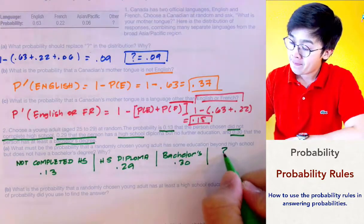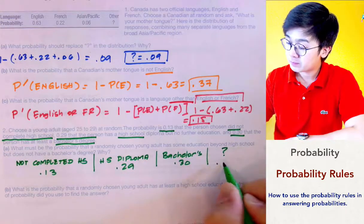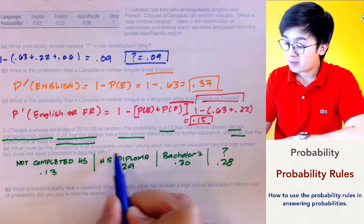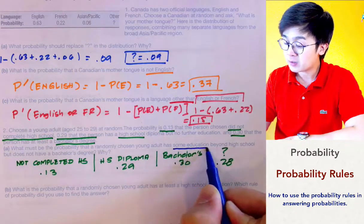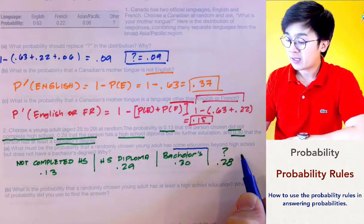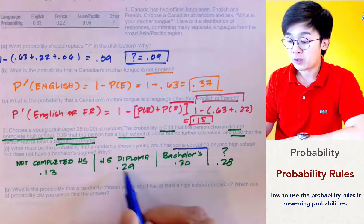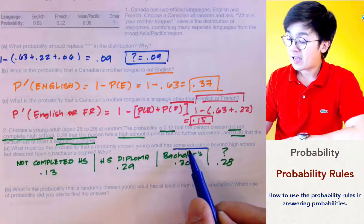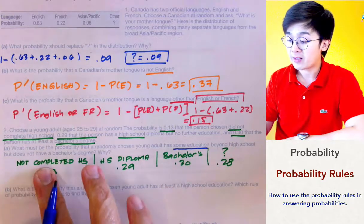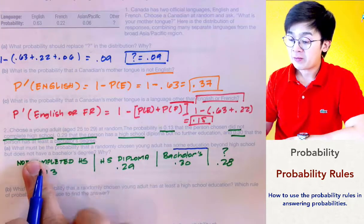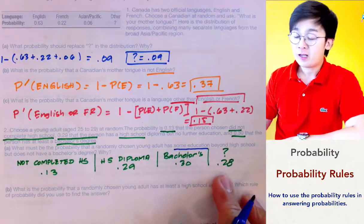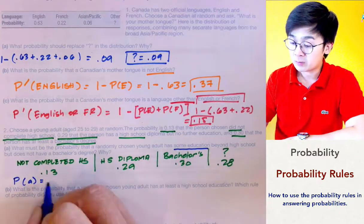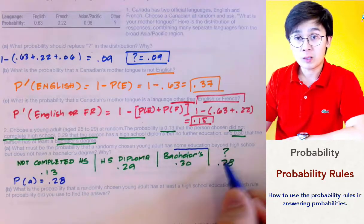The missing category is 0.28. Now that we have a legitimate probability model, let's answer the first probability question: the probability that a randomly selected adult has some education beyond high school but did not complete a bachelor's degree. The probability for letter A is simply 0.28, because this 28% is neither high school diploma nor bachelor's degree.